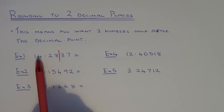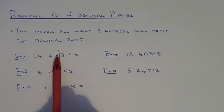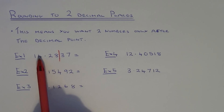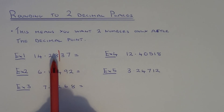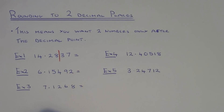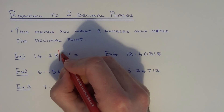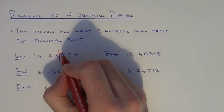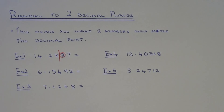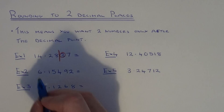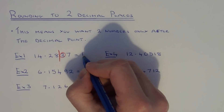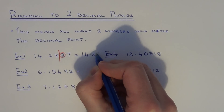Now we've got two possibilities. Our answer will either be 14.28, if we round the number down, or 14.29 if we round the number up. To decide which one it's closest to, just look at the number after the line, which is a three. Since that number is less than five, we round the number down, so this number will stay as 14.28.